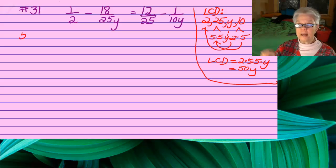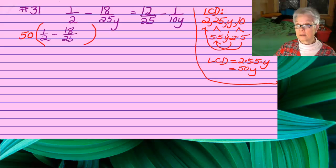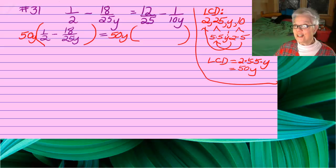I'm going to multiply both sides of the equation by 50y. Notice I put each side of the equation in parentheses. I should have said 50y there, not 50.